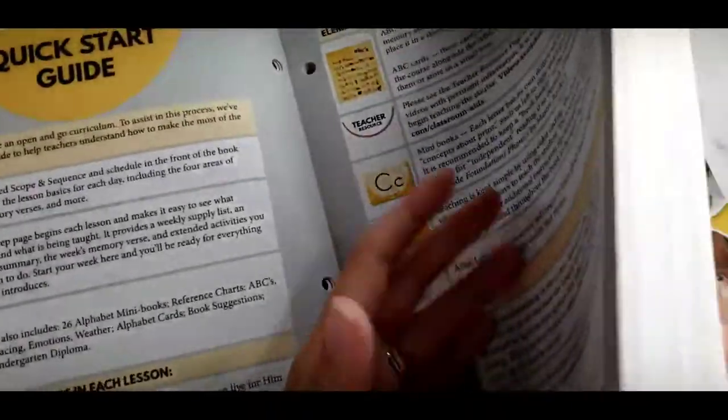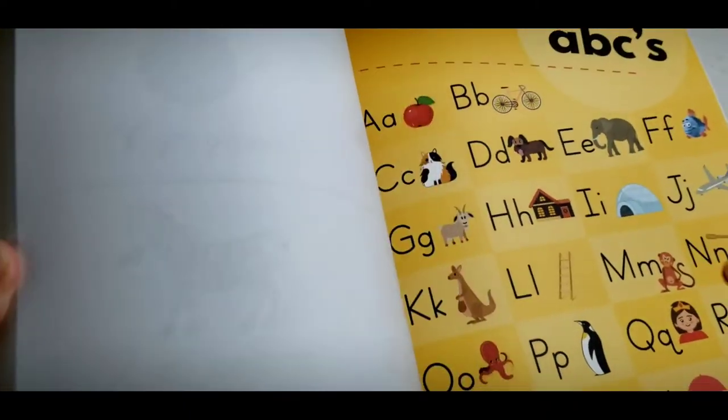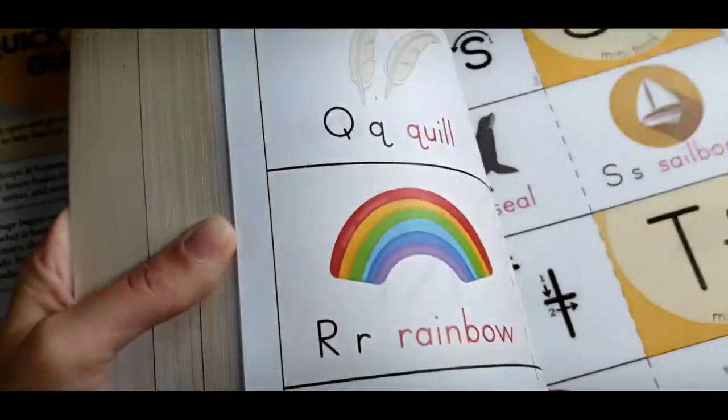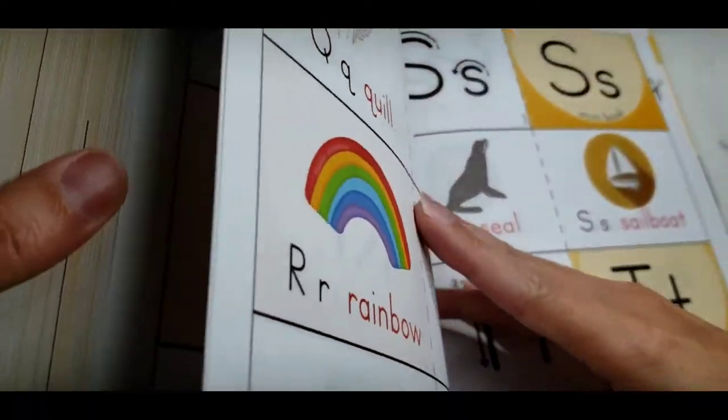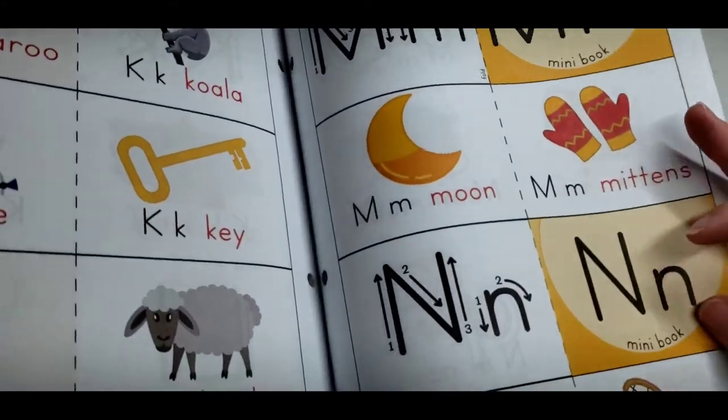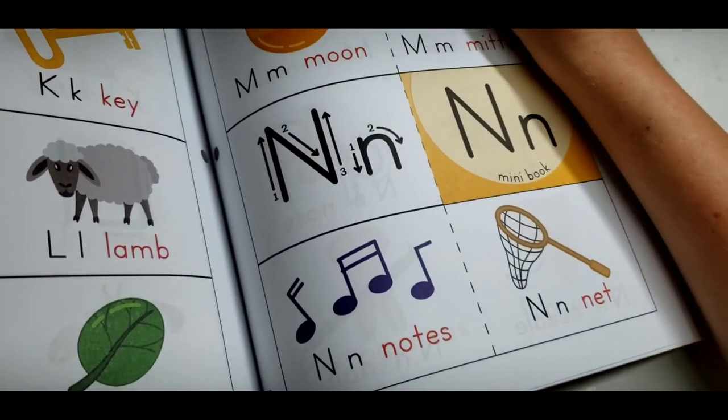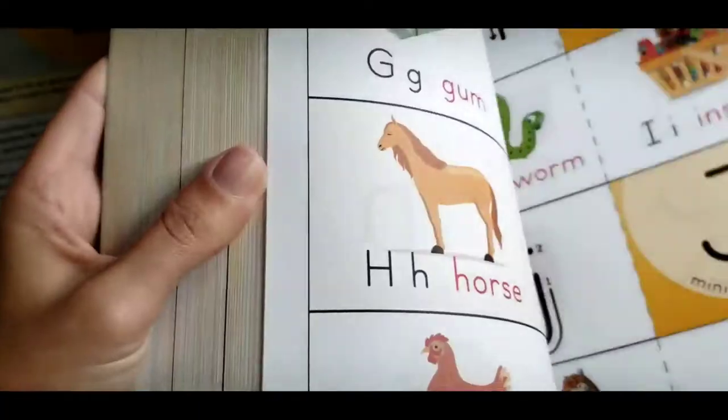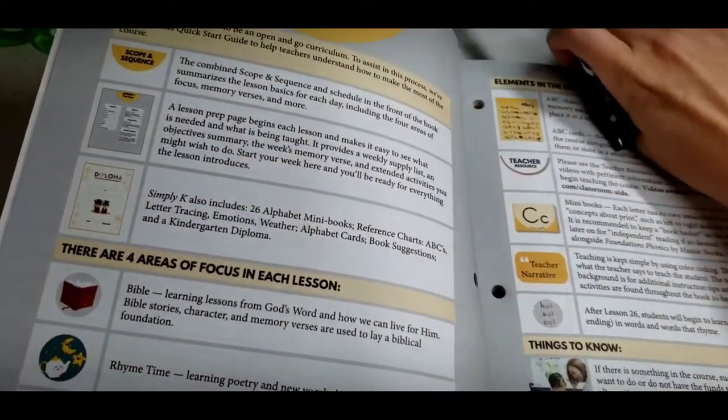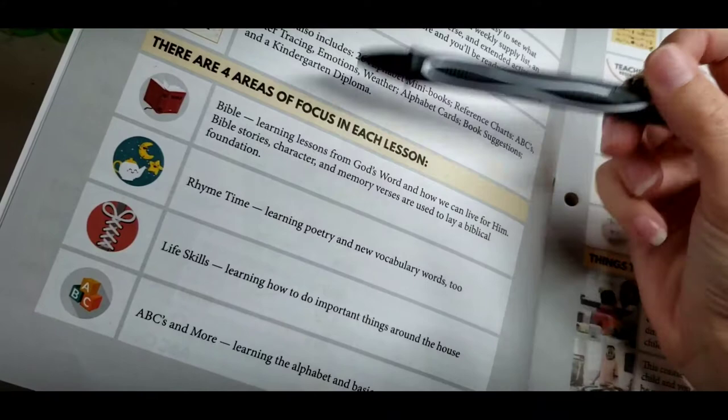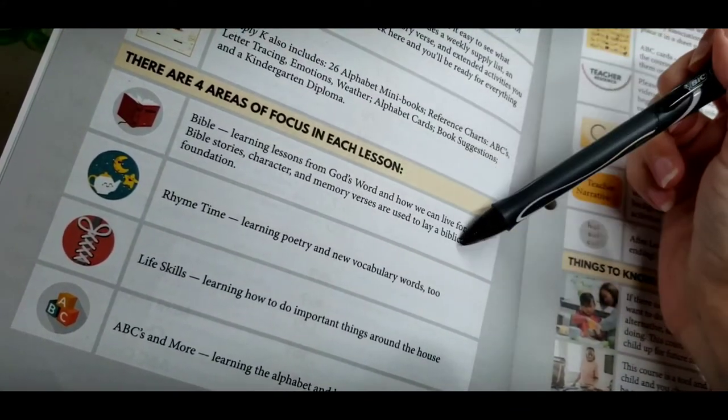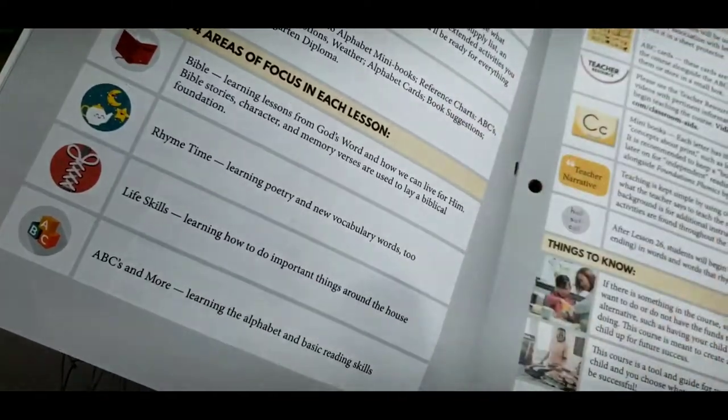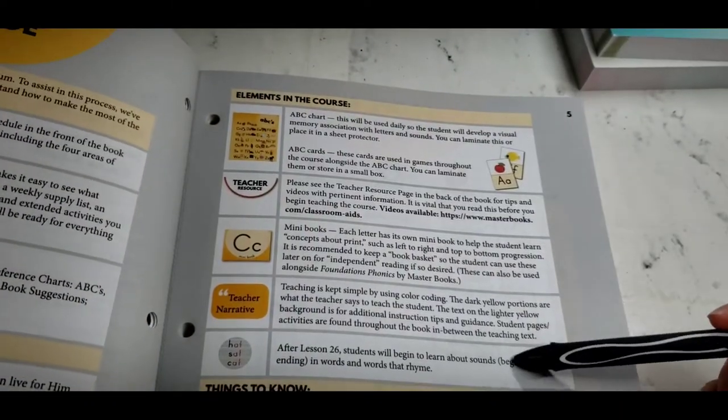So it combines the scope and sequence and schedule in the front. Summarizes the lessons for each day, including four areas of focus, memory verse, and more. So then you have the lesson prep page. Begins each lesson and makes it easy to see what is needed and what is being taught. It provides a weekly supply list, an objective summary, and the week's memory verse, extended activities you might wish to do. So you'll be starting each week on your lesson prep page. At the end, you get just like diploma and mini book and reference charts. So here's your ABCs. Here's the cards all cut out as flashcards of their mini books for each letter. So then you have N for notes and net. So you'll just cut and fold it together. And then you have the nest, nose, needle, and nail. So that's the same for all those letters in each lesson.